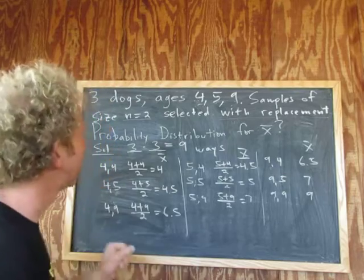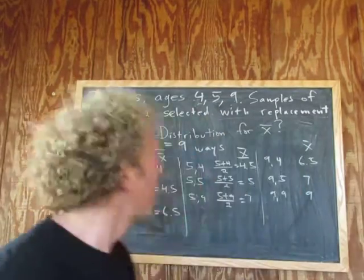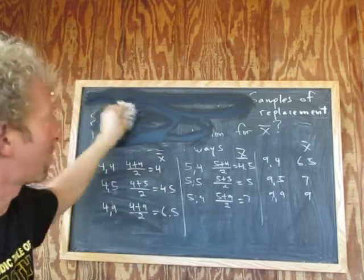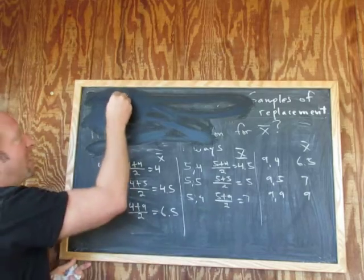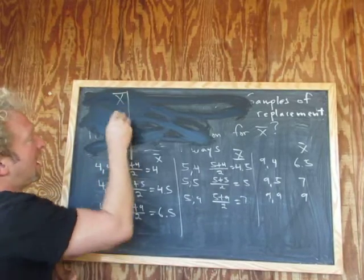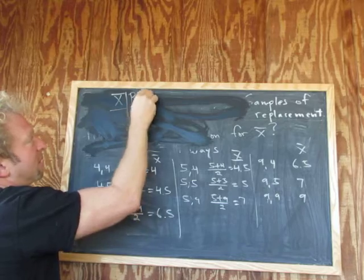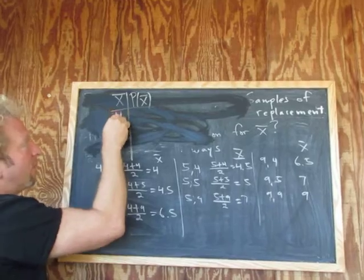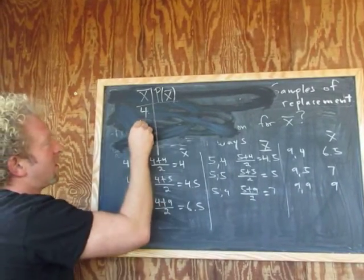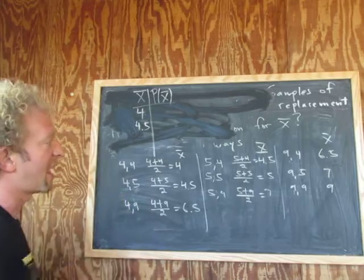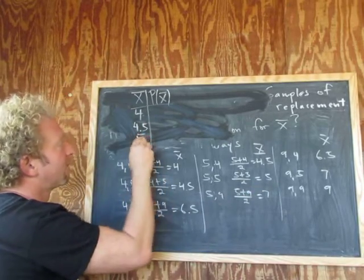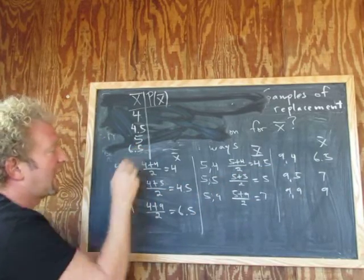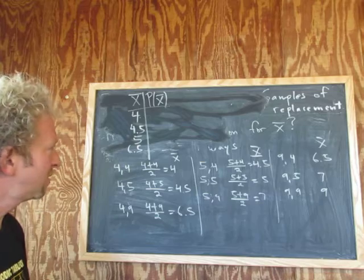Now we're going to squeeze in the final answer up here — I'm going to have to erase the actual question. The final answer is going to be a table, a probability distribution. So we have x-bar, and here we have the probability of x-bar. We're going to list all the possible sample means: the smallest one is four, then four point five, then five, then six point five, then seven, and the very last one is nine.